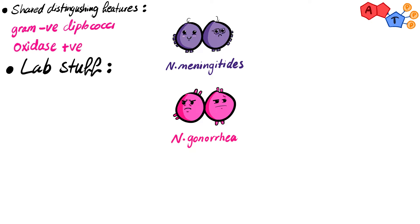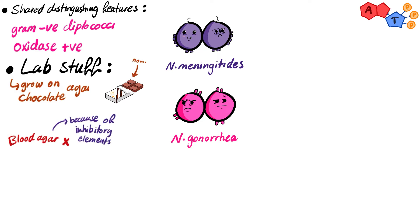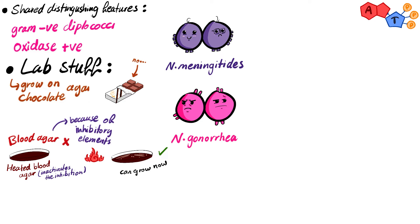For the lab, Neisseria species grow on chocolate agar. Neisseria cannot grow on regular blood agar because it's inhibited by some of the elements in it. However, when we heat the blood agar, these inhibitory elements become inactive and Neisseria can grow. This heated blood agar is the famous chocolate agar. The other medium used for Neisseria's growth is Thayer-Martin agar, which is a selective agar that only allows Neisseria species to grow while inhibiting other organisms.